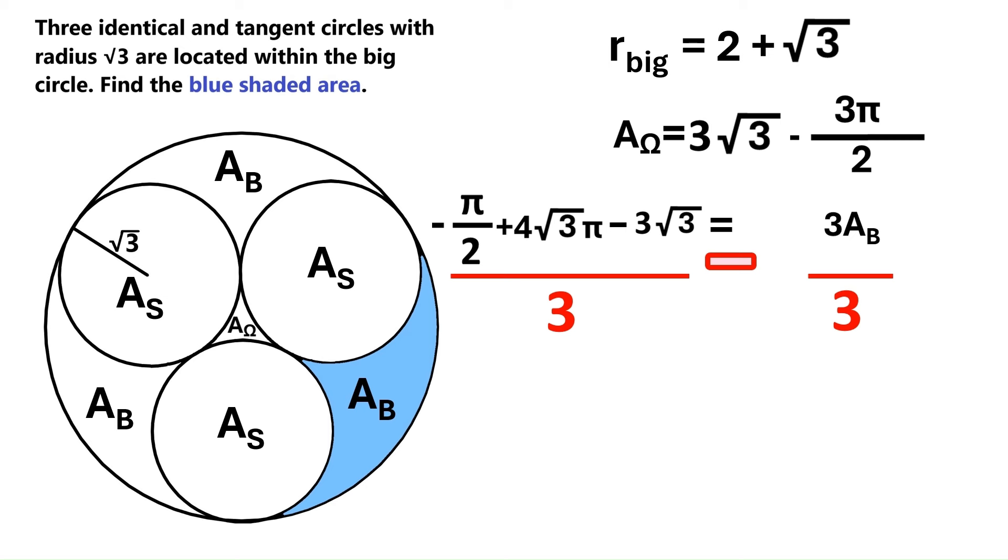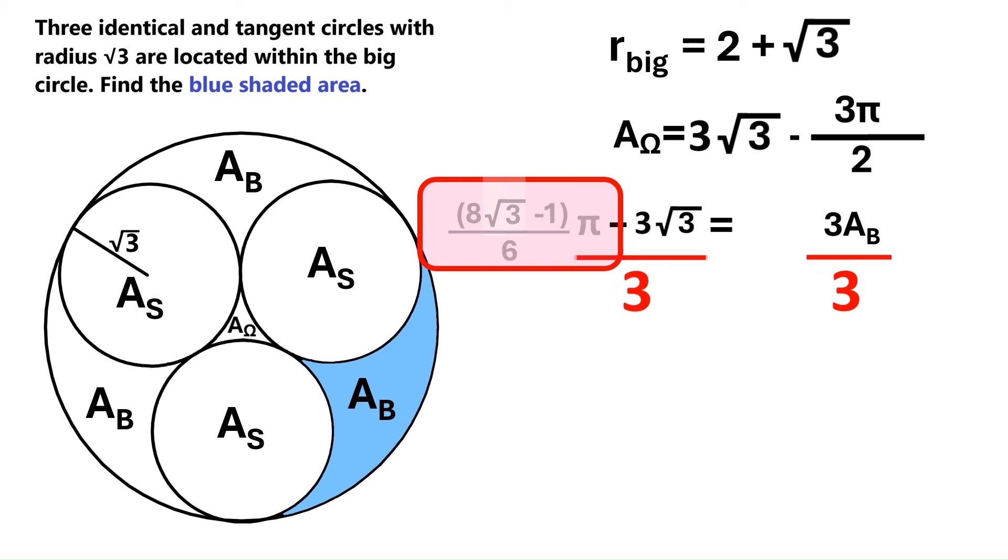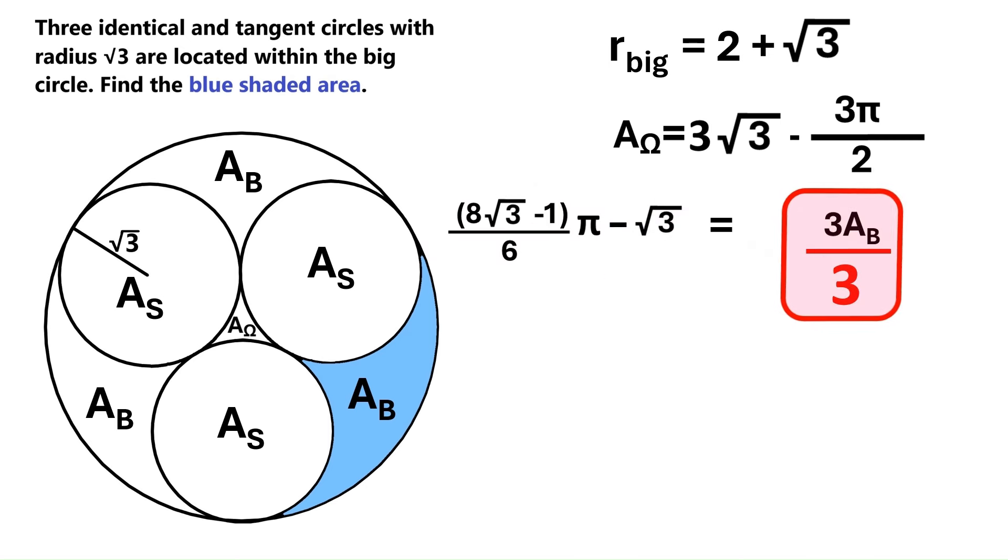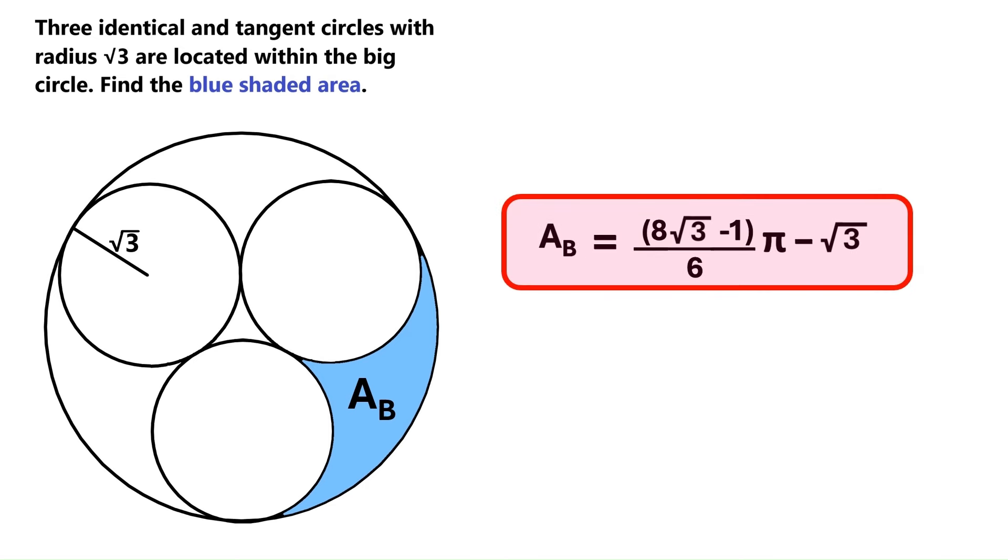Next, we divide both sides by 3. This part here becomes this, and here the 3s cancel out. And on this side also, the 3s cancel out. And it turns out the blue region's area is 8 times radical 3 minus 1, all in brackets, times pi over 6, minus radical 3.